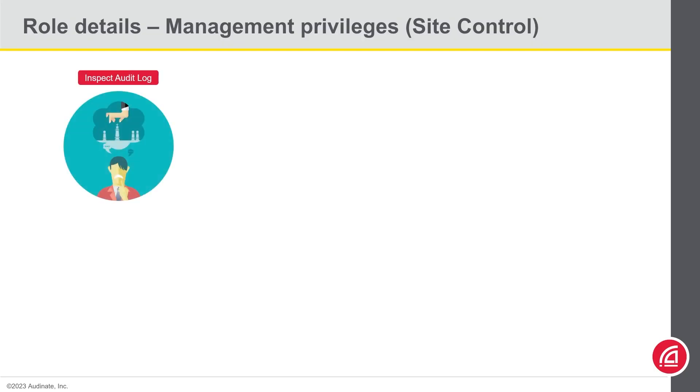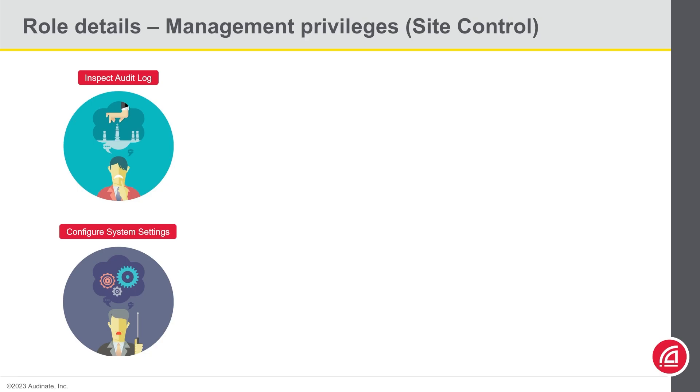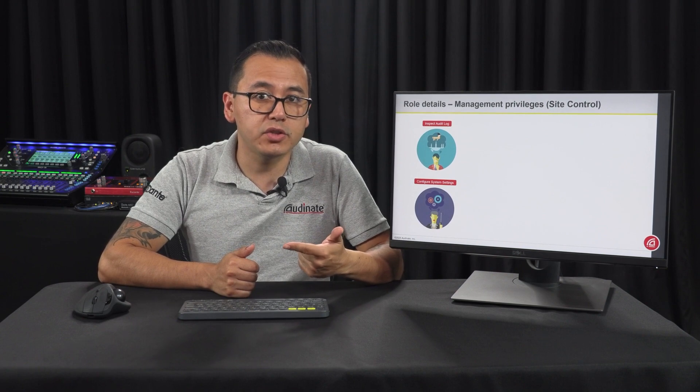Let's dive deeper into the user roles, starting with site control. The site control user role is the role with the highest privilege among the default roles. It is primarily intended for a super admin who has control and visibility over the entire managed DDM network. Site control gives the ability to inspect the audit log and manage system settings — things like performing updates, downloading system configuration or logs, adding or removing TLS certificates, changing network and security settings, license management, configuring HA, and setting up external services.